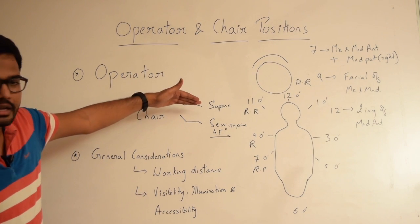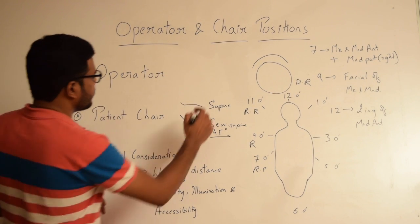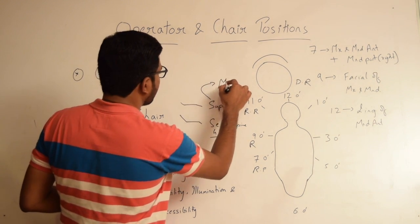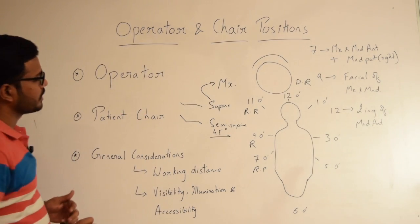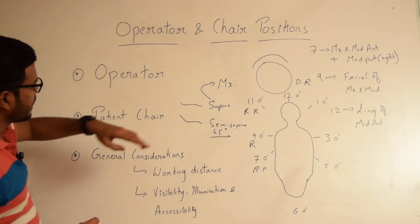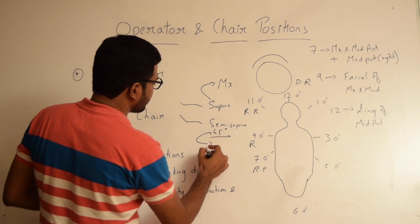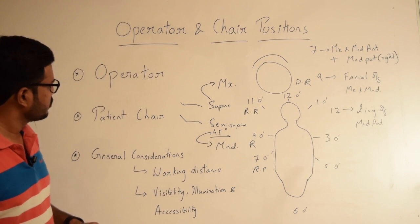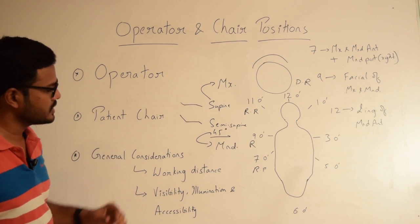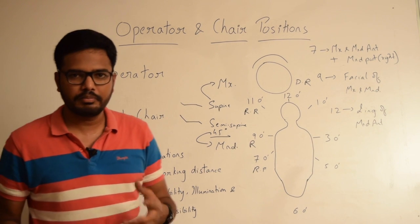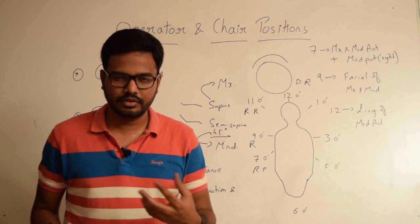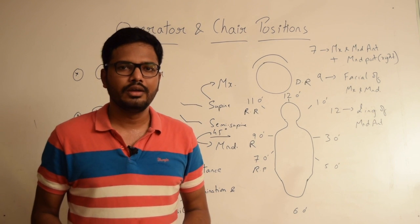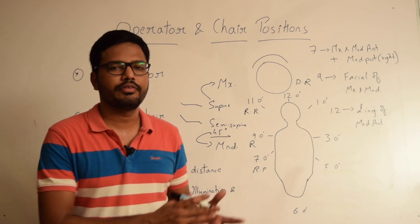Supine position is most commonly used when we are operating upon maxillary arch, the teeth present in the maxillary arch. Semisupine is advised when we operate upon the teeth present in the mandibular arch. By maintaining these chair positions we can ensure that the patient has a stress-free treatment protocol with less muscle fatigue and stays comparatively comfortable and cooperates with our treatment.